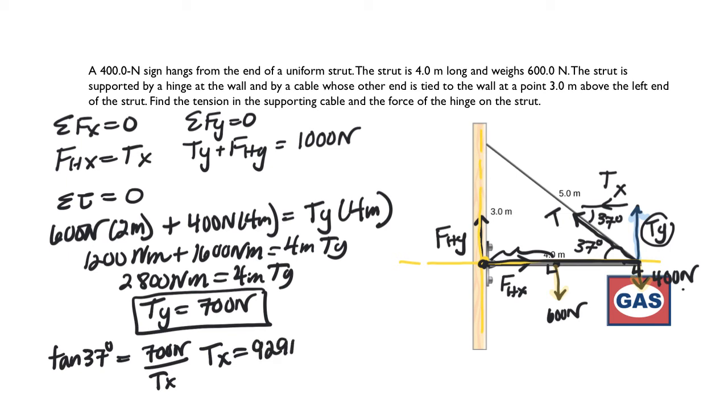That tells me that TX is equal to 700 over tan 37, which is 929 newtons, which is also going to be the X component of the hinge force. So I've got my TX. I've got my TY.